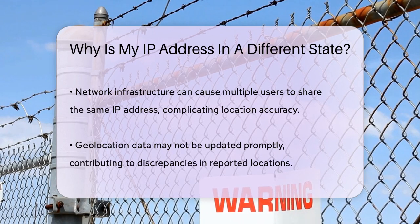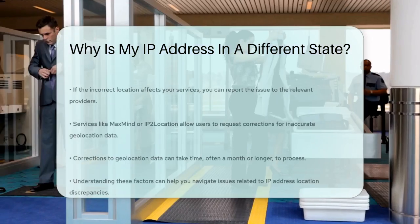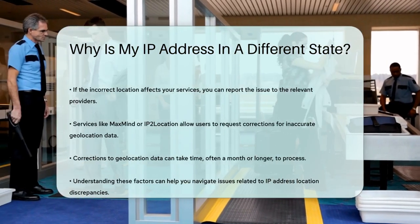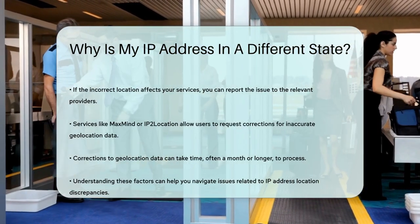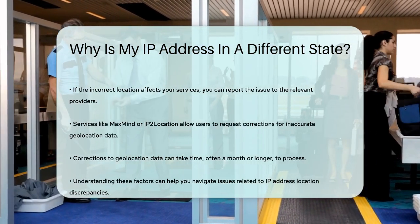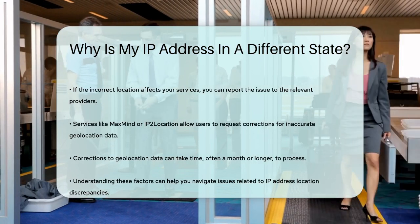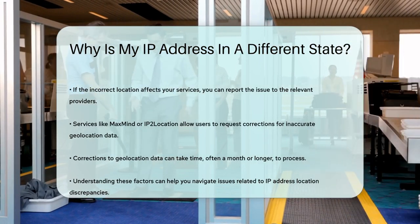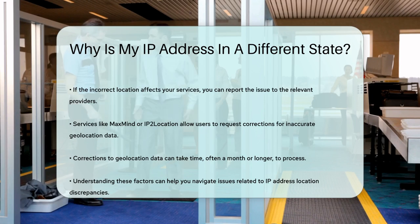So what can you do if this is happening to you? If it's causing issues with services you need, you can try reporting the incorrect geolocation data to the relevant providers. There are several services that allow you to request corrections, such as MaxMind or IP2Location. However, it can take some time — often a month or more — for these corrections to be made.